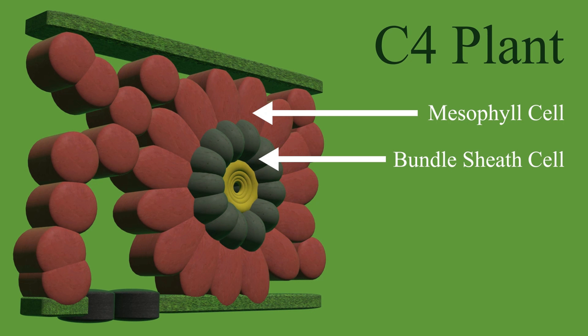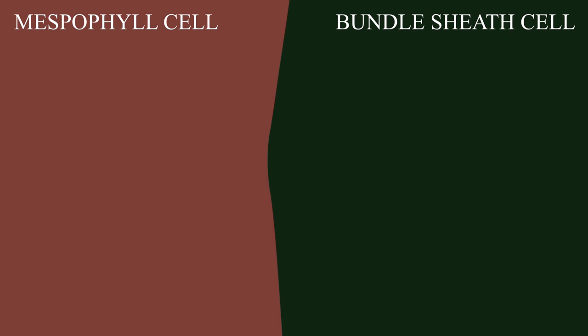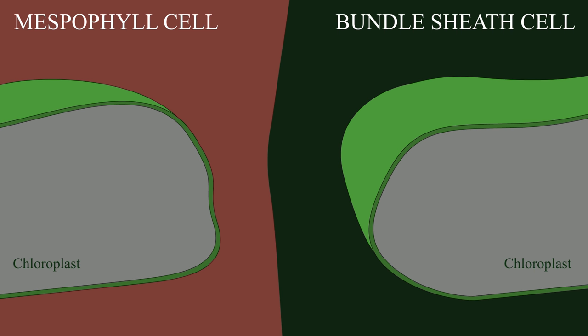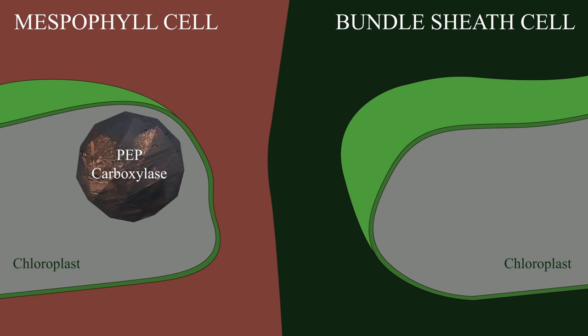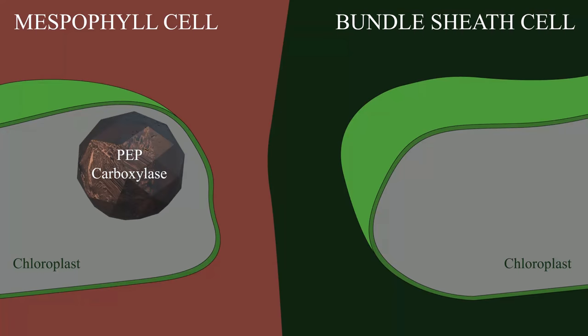Let's look at the C4 pathway, also called the HSK or Hatch-Slack-Korshak pathway. This pathway takes place in C4 plants, specifically in the mesophyll and bundle sheath cells. The reactions take place within their chloroplasts. We start off in the chloroplast of the mesophyll cell with PEPA, or phosphoenolpyruvate, which is a three-carbon molecule, CO2, and PEP carboxylase. PEP carboxylase adds the CO2 onto the PEPA, and the result is OAA, or oxaloacetate.